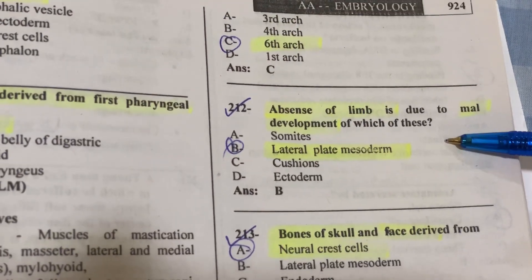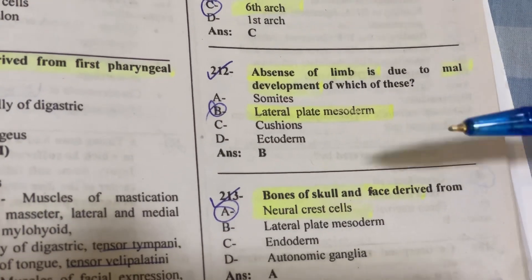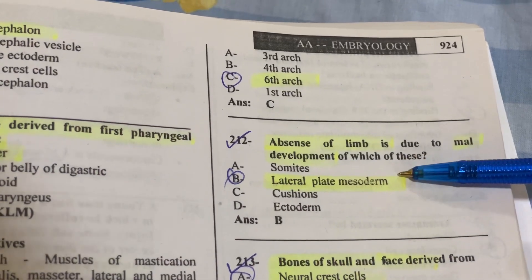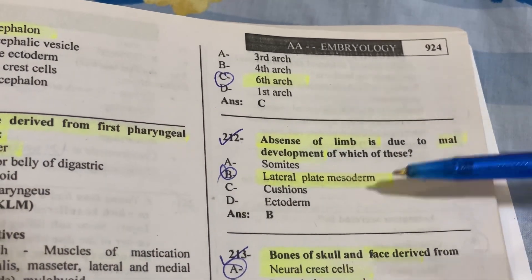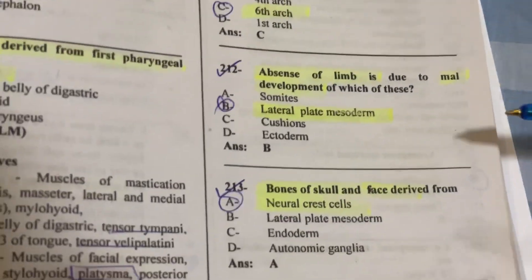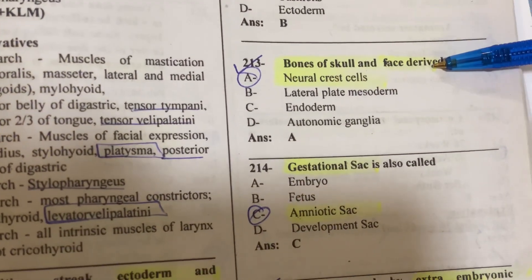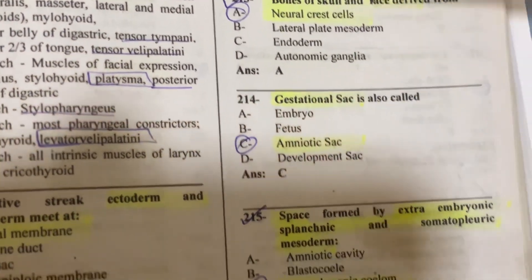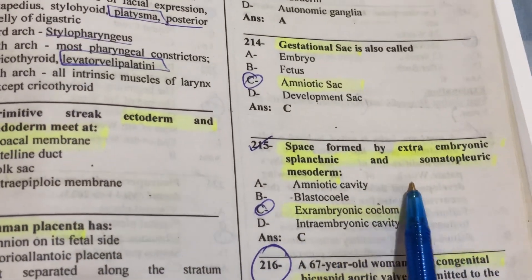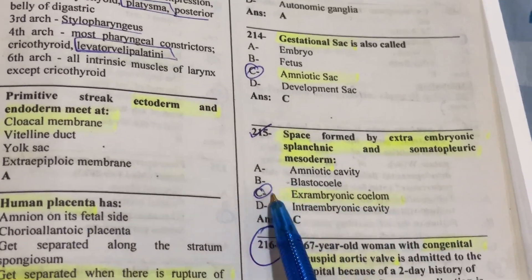Absence of limbs due to malformation is linked to lateral plate mesoderm. Lateral plate mesoderm also creates other structures, and absence of limb is a malformation. Skulls and facial bones are derived from neural crest cells. Extra-embryonic splanchnic and somatopleuric mesoderm forms the exocoelom. Gestational sac and amniotic sac are also noted.